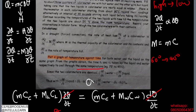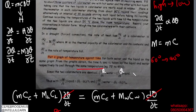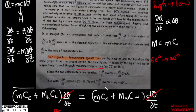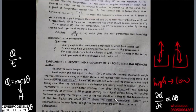Looking at what they wrote here — they equated change in temperature over change in time for water to that of the liquid — that is actually a typo error. What should be equated is the rate of heat loss: dQ/dt for water equals dQ/dt for the liquid. It is the rate of heat loss that must be equal for both calorimeters, not the rate of temperature change. That's it for this particular experiment.